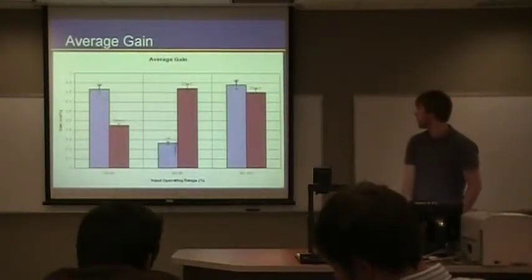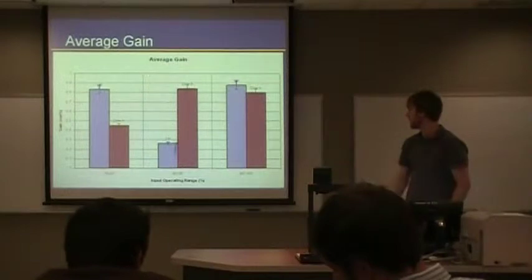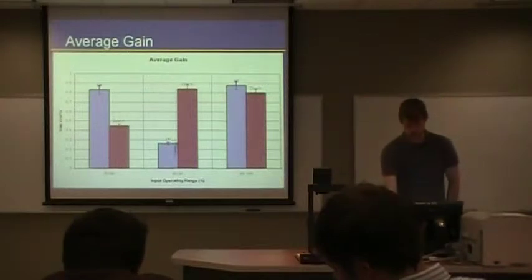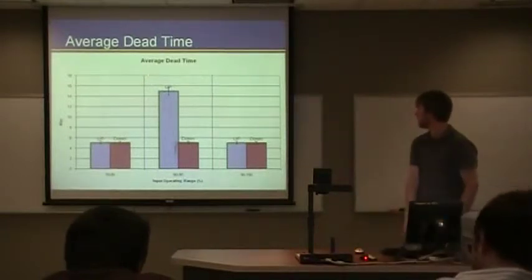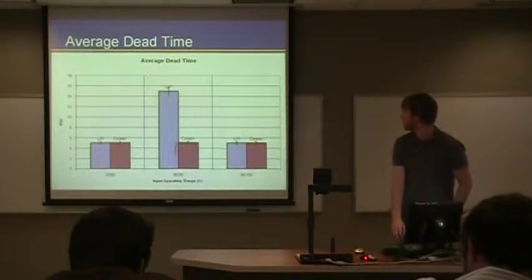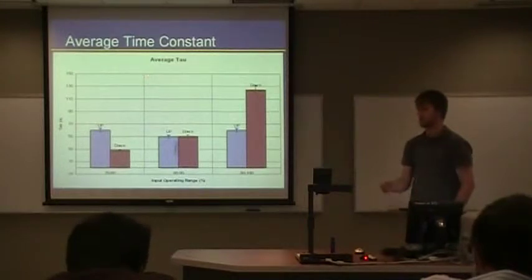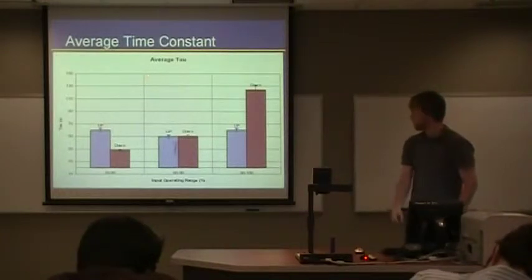The average gain that we received up and down is shown pretty stable across the board. The only two that stand out from the rest are the down from 70-80 and the up from 80-90. And repeatability might level that out if we do more tests. But as such, that's what we have. The average dead time hangs around five seconds, except for the one that you can see sticking up there from 80-90, and that took 15 seconds. The average time constant that we found for our system using the step response, the first order plus dead time model, is shown around a minute. This is the average that we found for all of the steady state range.